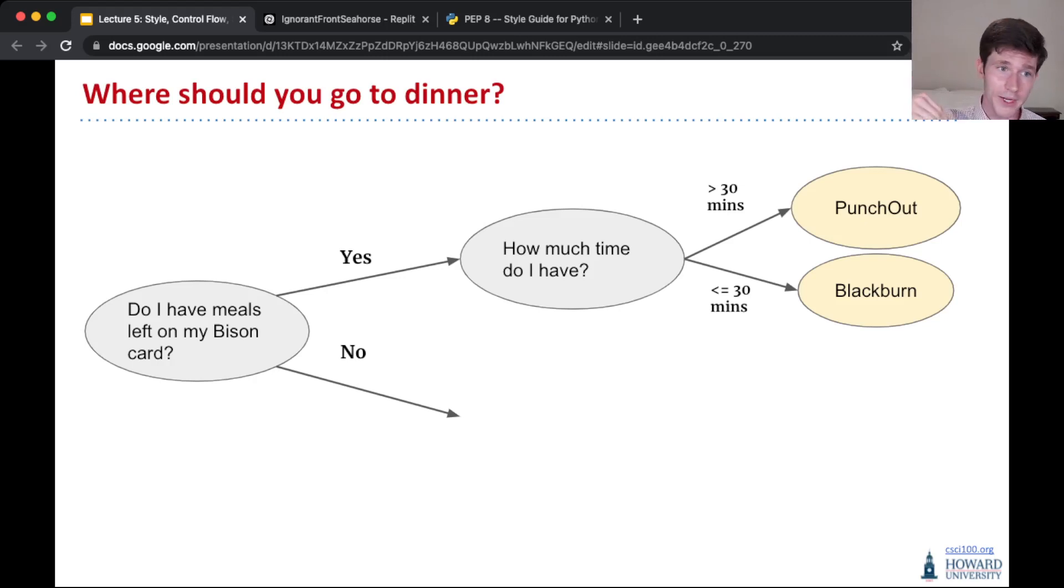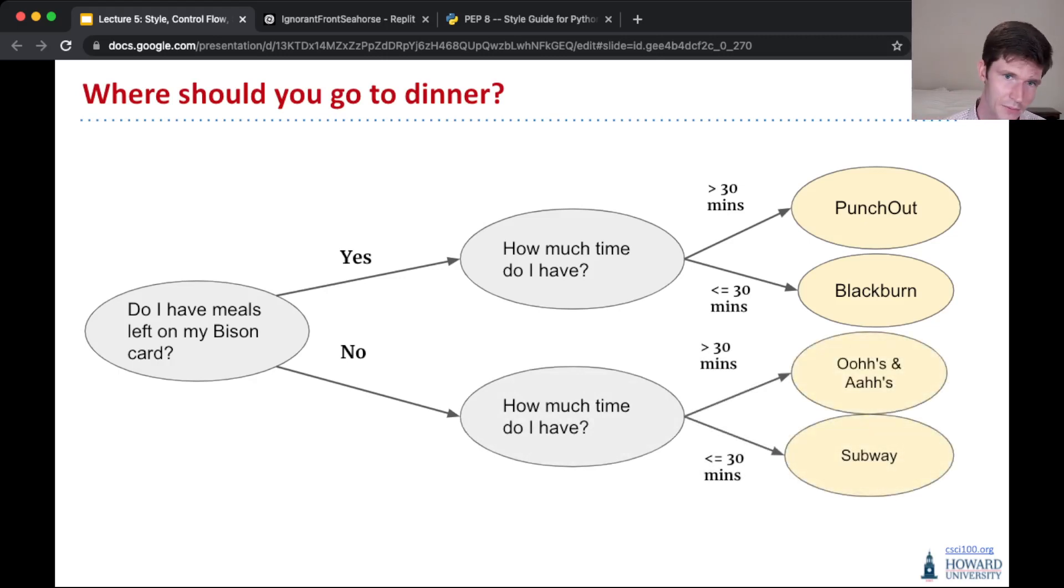But then on the no branch of this, so maybe you have no meals left on your bison card and you have to go somewhere else, you still are going to have this question, how much time do I have left? And maybe if you have more than 30 minutes, you'll go to oohs and ahs. And if you have less than 30 minutes, you need something fast, you decide to go to Subway.